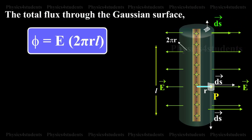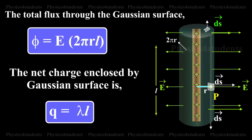Total flux through the Gaussian surface phi equals E into 2 pi rl. The net charge enclosed by Gaussian surface is Q equals lambda l.